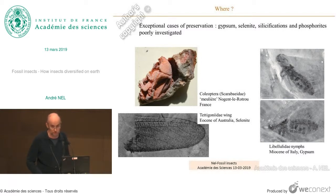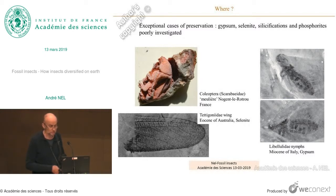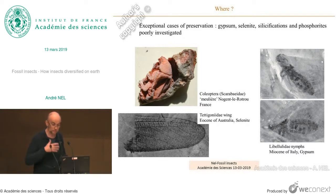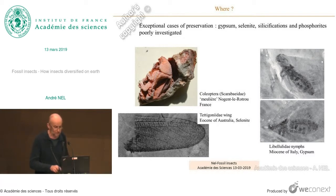For phosphorite, we have examples in France in the Quercy, and also in Kenya. The studies on these fossils are very preliminary, even if they are very old. Some work was done by Hans Schindt around the 1940s, but very little. Now, using CT scans, German colleagues have made new analyses and found that insects in phosphorite are very well preserved. So it is very promising, but still to be done.